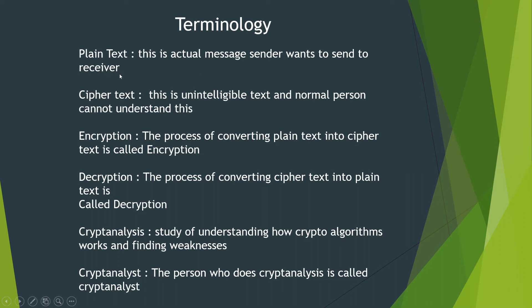For example, if I want to say hi to my receiver, I say 'hi, hello.' That 'hi, hello' is called plain text. Cipher text is unintelligible text that a normal person cannot understand. I perform some operation on my plain text to get this cipher text, and I will send this cipher text to my receiver.